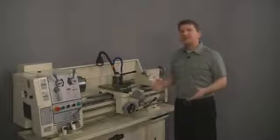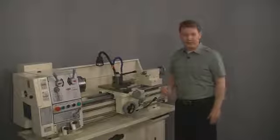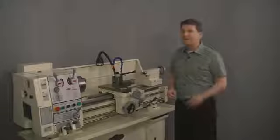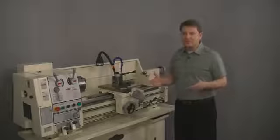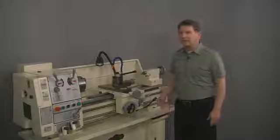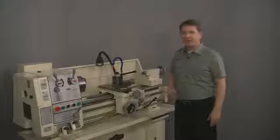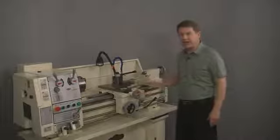We'll demonstrate by taking a look at a very popular gunsmith lathe. First we need to determine which axis we're going to be measuring with our DRO kit. Digital readouts are designed to measure the X and the Z axis.